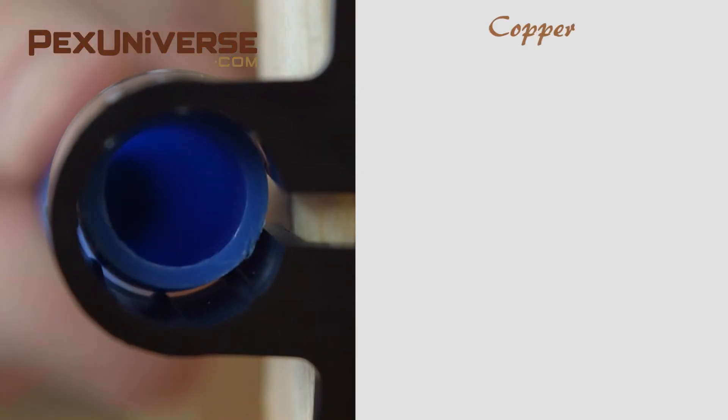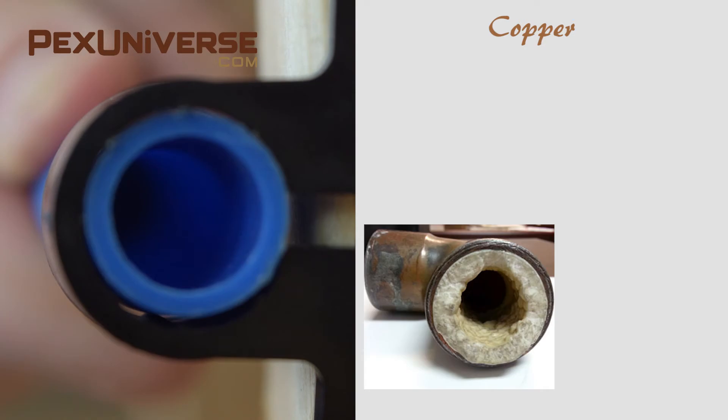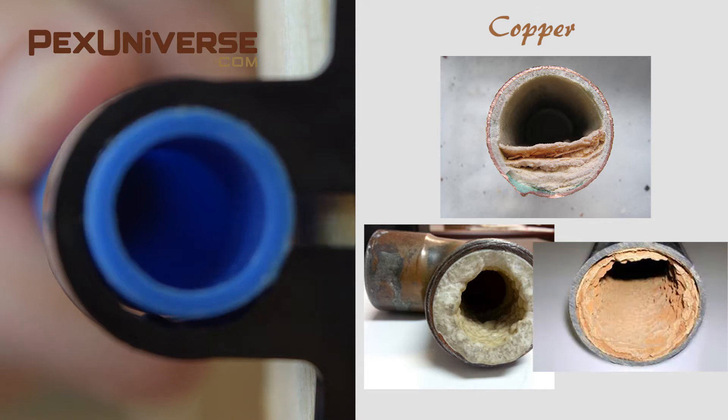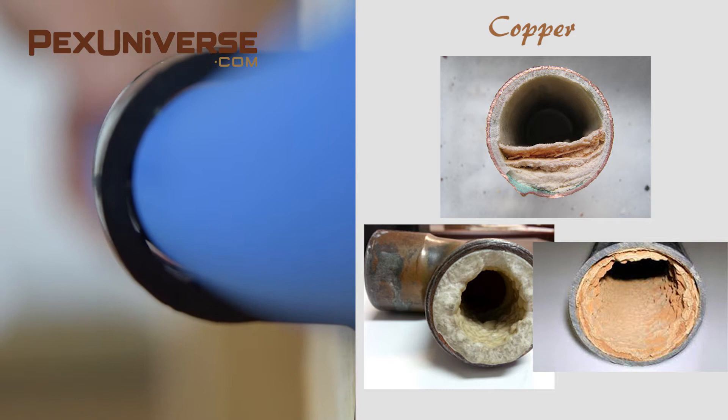PEX has smooth inner walls so minerals don't build up as fast as they do in copper tubing. This also means there's less water line noise. PEX material doesn't amplify sound as much as copper tube which helps eliminate flow noise and water hammer.